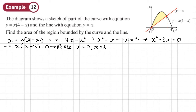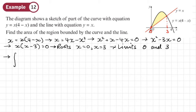From x squared minus 3x equals zero, the roots are x equals zero and x equals three. So I was right about one limit being x equals zero, and the other limit is x equals three. That means the limits for this area are zero and three, and I'll use the second method — subtract the functions algebraically first, then integrate.